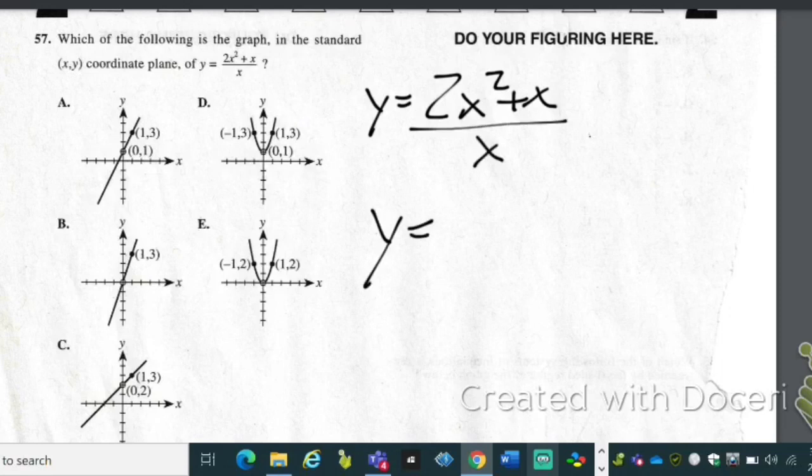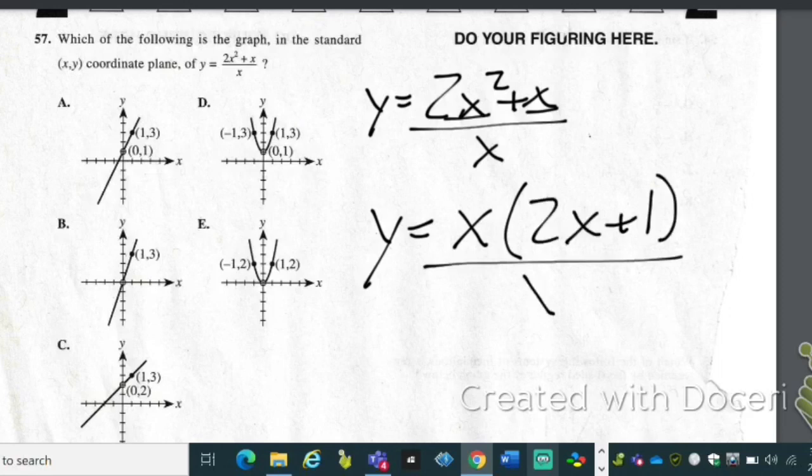Both of them have an x in common, so you pull out an x and what's left over is 2x plus 1 over x. Now those x's are going to cancel out.